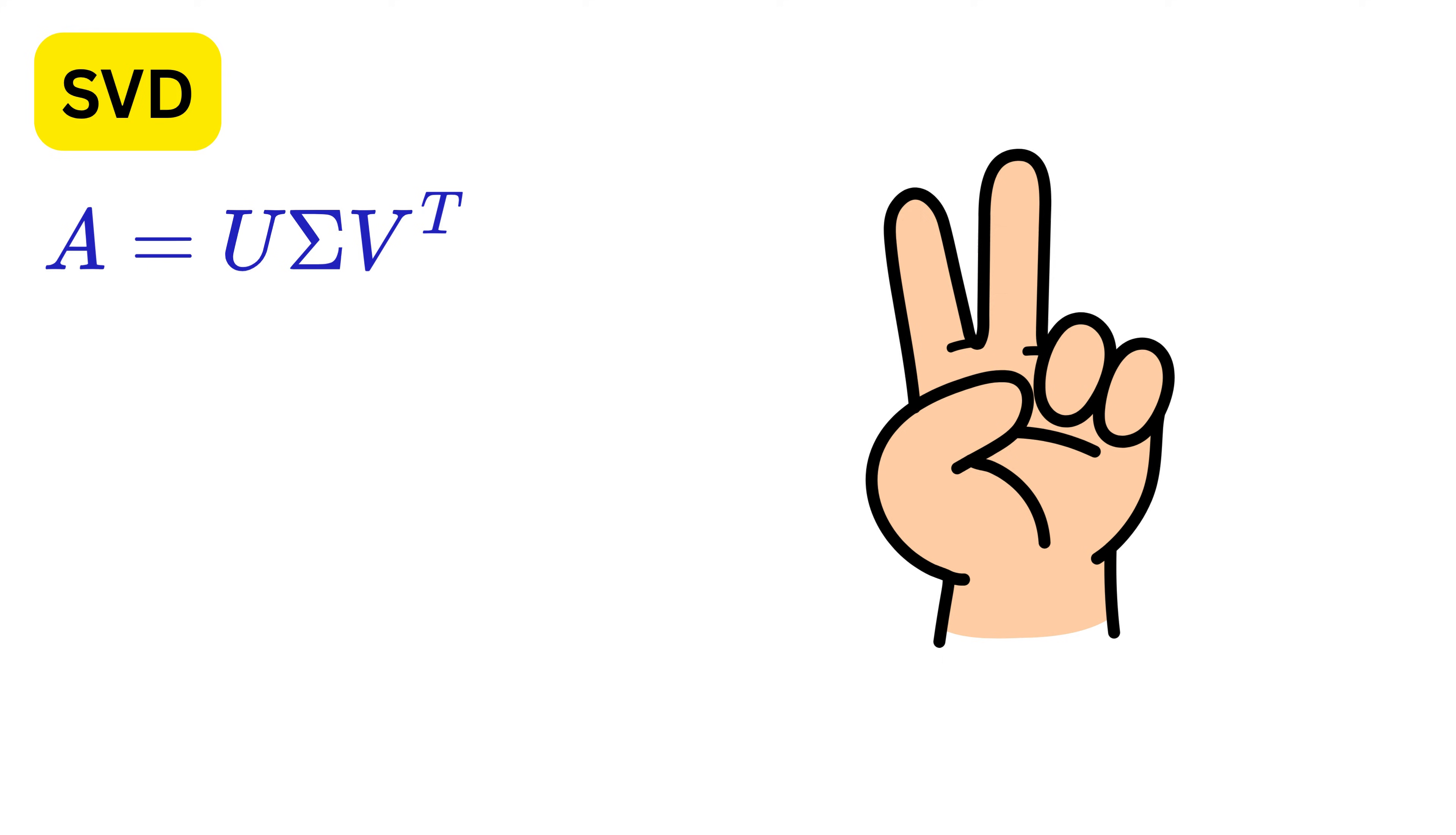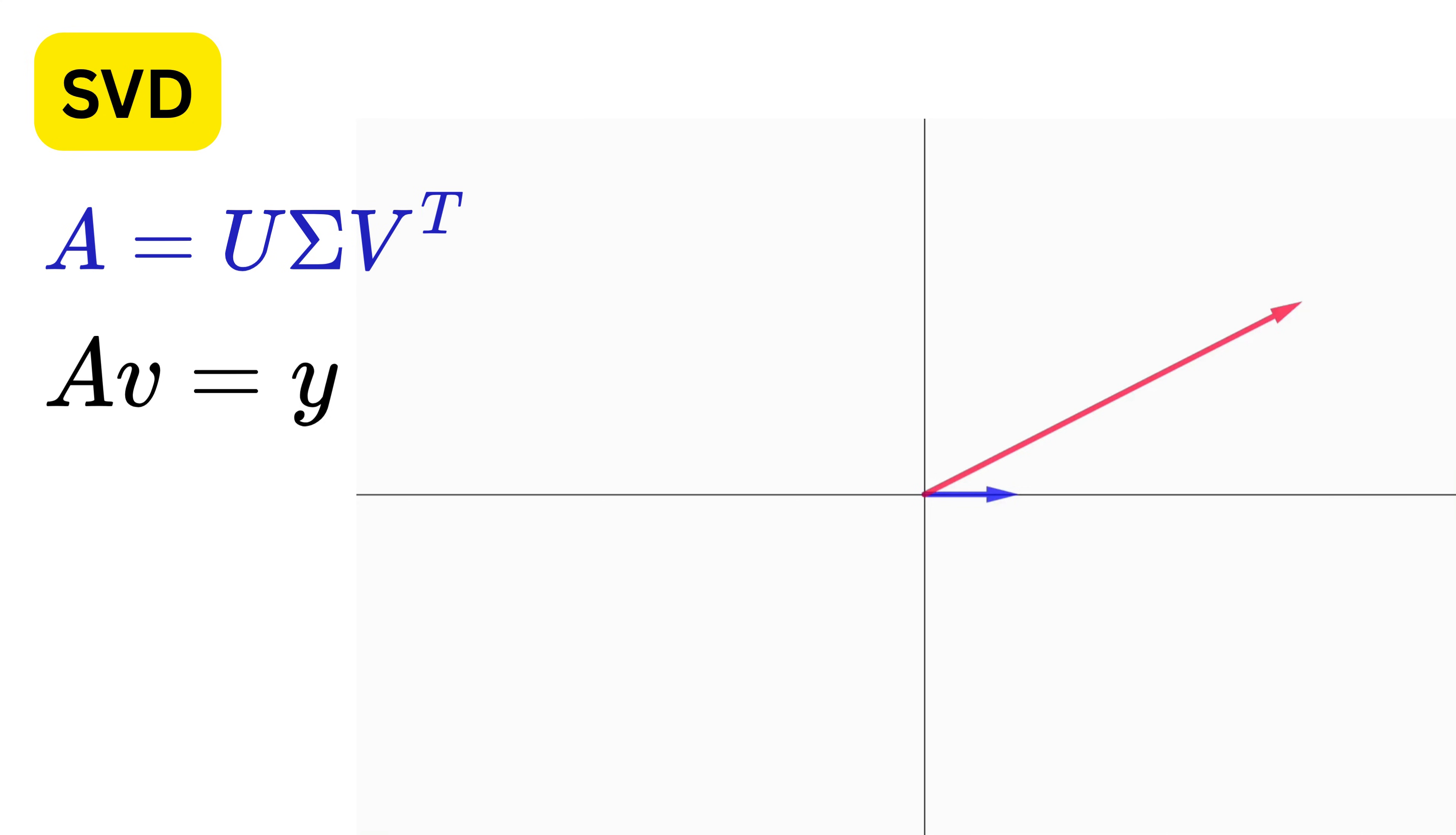Okay, let me tell you two nice applications of SVD. First is it tells us in what direction does our matrix A stretch the unit vector V the most. You can see that as we rotate a unit vector V, the length of the transformed vector Y keeps changing.